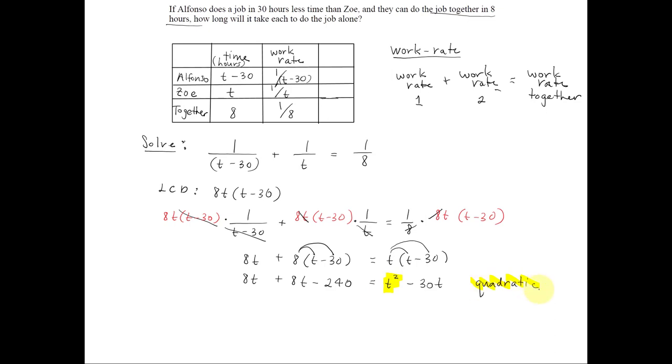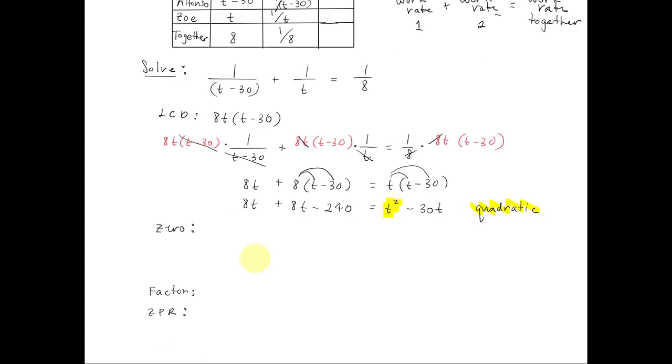I'll have to solve by factoring. The first step is to get 0 on one side, and then factor, and then we can use the zero product rule to solve. Combining like terms on the left side, we get 16t minus 240 equals t squared minus 30t. Let's move everything to the right side and subtract 16t and add 240, giving us 0 equals t squared minus 46t plus 240.